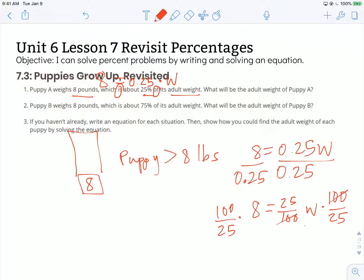So 100 times 8 is 800. Divide that by 25. How many 25s are in 800? Well, I know there's four 25s in 100. So there must be 8 times as many 25s in 800. So I think that's going to be 32.